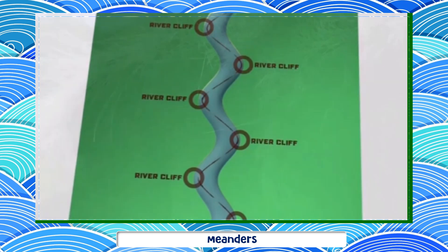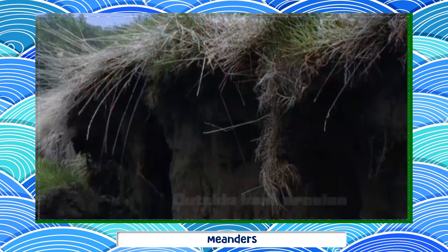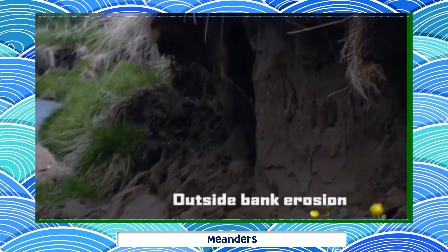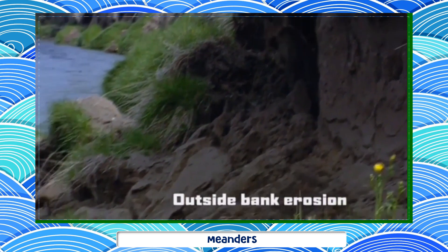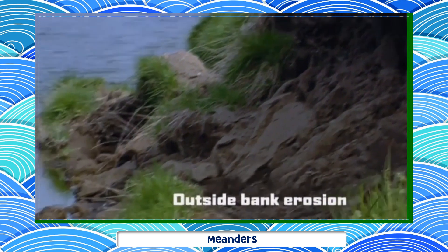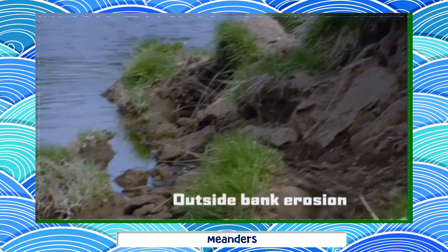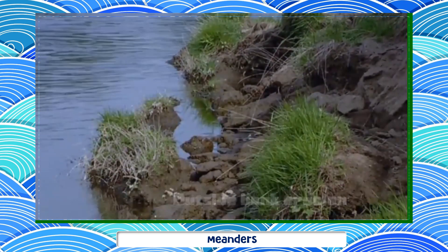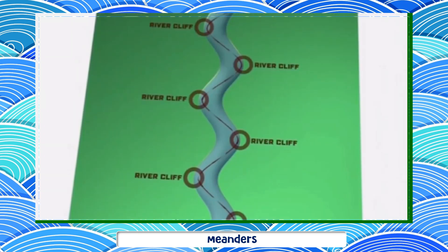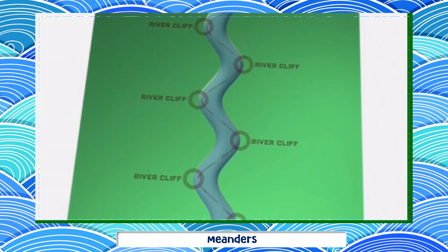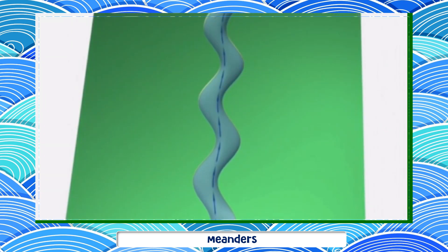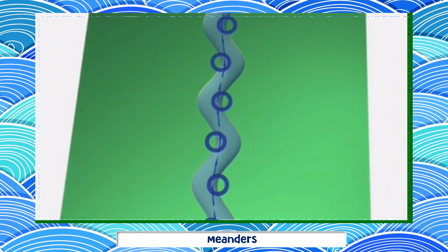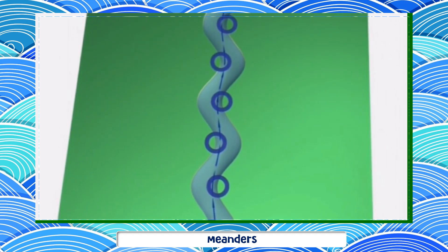On the inside bend, the water is shallower and slower, allowing the river to deposit some of its load.